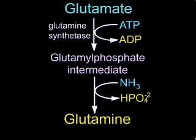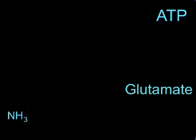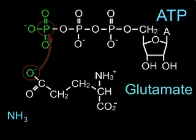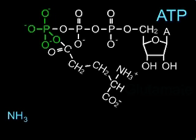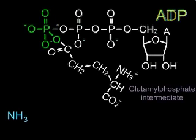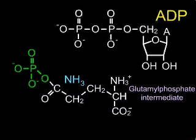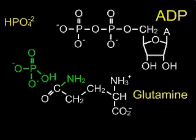Glutamine is made from the substrates glutamate, ATP, and ammonia. A side-chain oxygen from glutamate attacks the gamma-phosphate of ATP, forming a penta-coordinate phosphorus, which collapses to produce ADP and glutamyl phosphate. Ammonia attacks the activated glutamyl carbon, producing a tetrahedral intermediate, which collapses to form glutamine and inorganic phosphate.